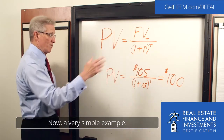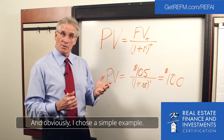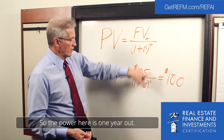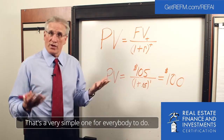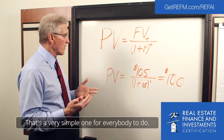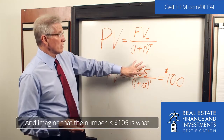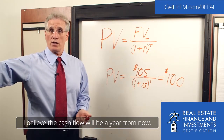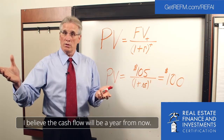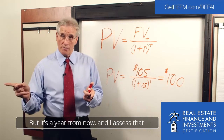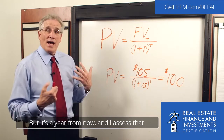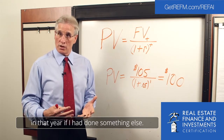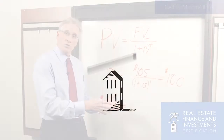Now a very simple example — and obviously I chose a simple example — let's go one year out. So the power here is one, just one year out. Imagine that the number is $105, which is what I believe the cash flow will be a year from now. But it's a year from now, and I assess that I could have been making 5% on my money in that year if I'd done something else.